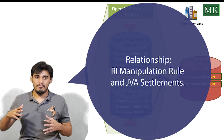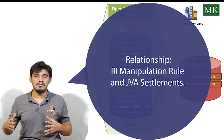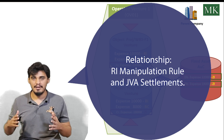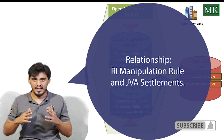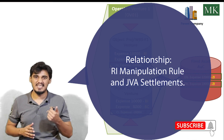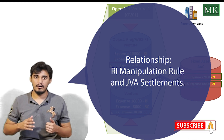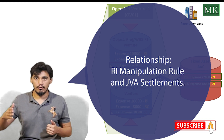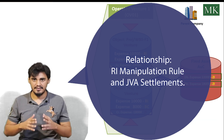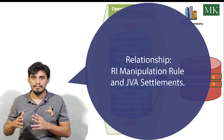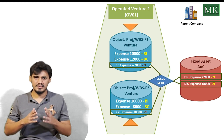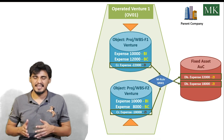For this, we will use the recovery indicator manipulation rule M001, which is assigned in the allocation structure in the settlement profile for the project. This assignment is done in the PS module configuration.